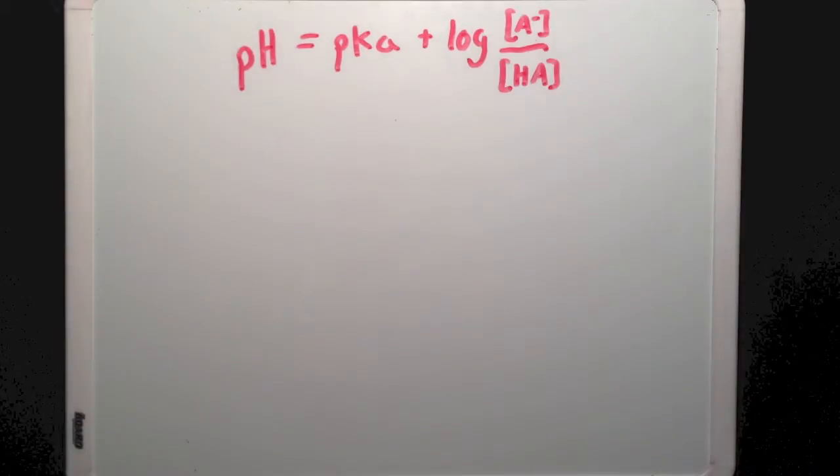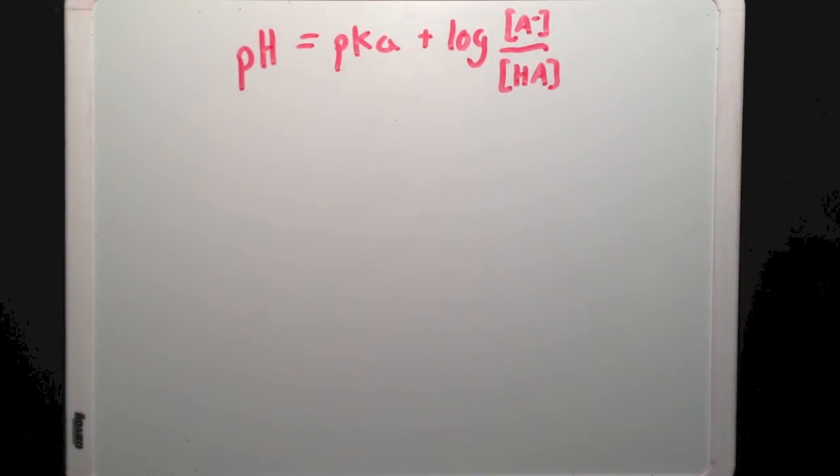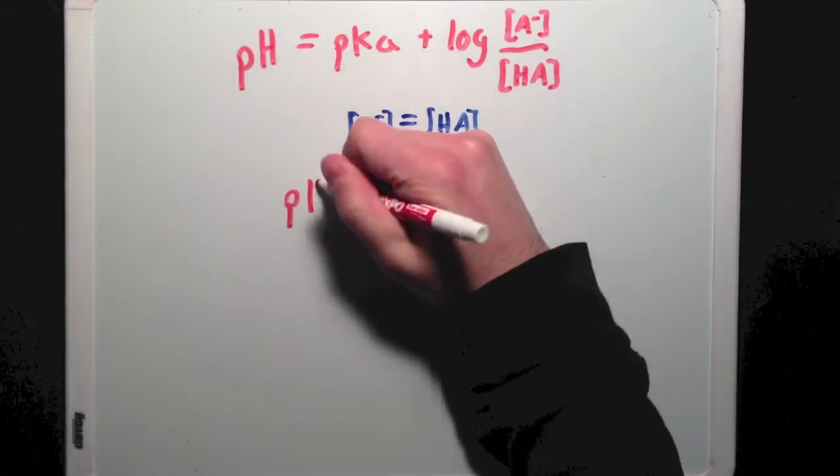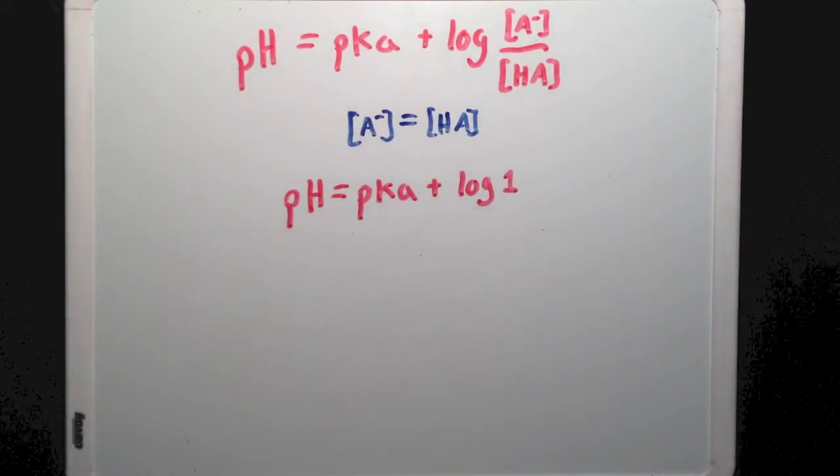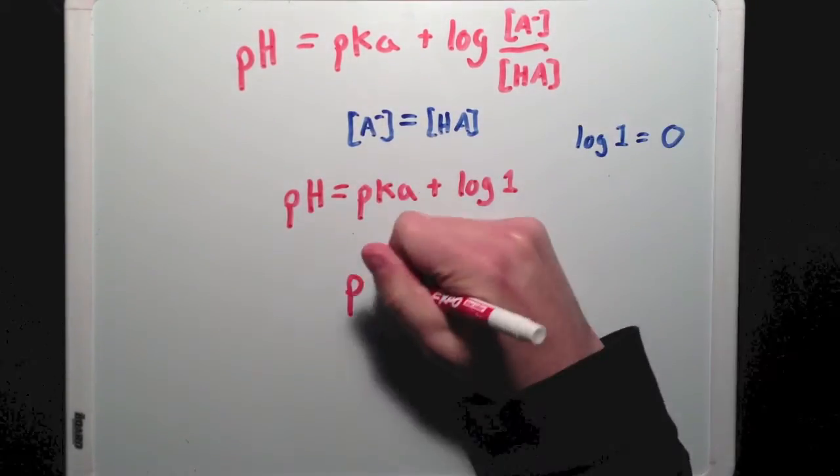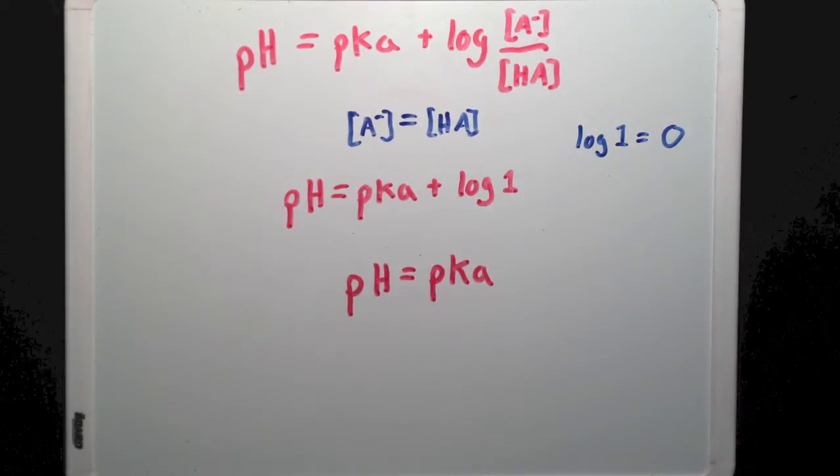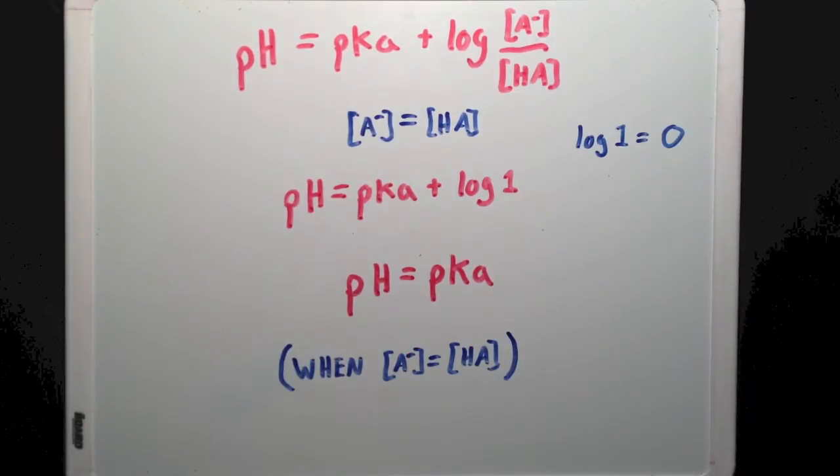Let's do some math. If we take the Henderson-Hasselbalch equation and say that the concentrations of buffering acid and base are equal, we can simplify our expression a little. And since the log of 1 is equal to 0, we find that when the concentrations of buffering acid and base are equal, the solution's pH is equal to the buffer's pKa.